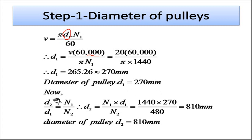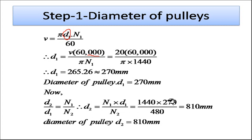Now we find the output pulley diameter. Considering the same velocity ratio: d2/d1 = n1/n2, therefore d2 = n1 × d1 / n2. With n1 = 1440 rpm, d1 = 270 mm, and n2 = 480 rpm, we get d2 = 810 mm as the diameter of the output pulley.